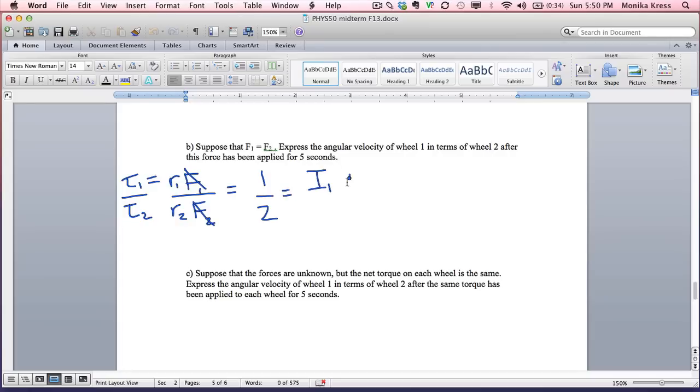But we're not quite there yet. The torque is also equal to I alpha. I1 alpha1 divided by I2 alpha2. I1 over I2, we showed in the previous step, is 1 over 8. We still don't know what alpha is going to be. Alpha is proportional to the angular velocity. This is the equation that would apply: alpha equals delta omega over delta t. The delta t is the same in both cases.